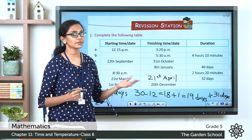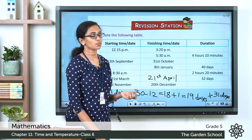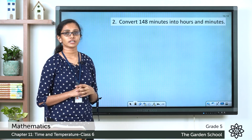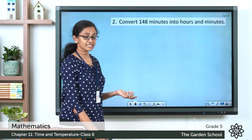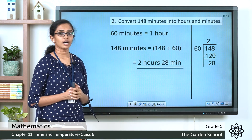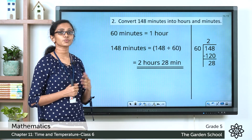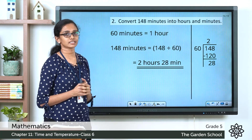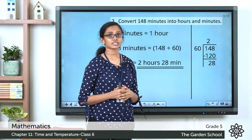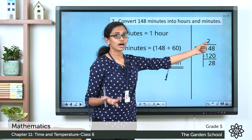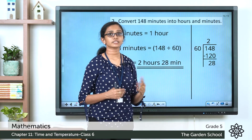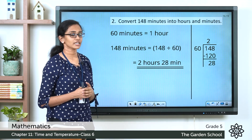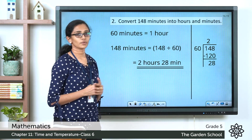I hope you are clear with these questions. The next one: convert 148 minutes into hours and minutes. We know 60 minutes equals 1 hour. So 148 divided by 60 gives 2 full hours with 28 minutes remaining. The equivalent is 2 hours 28 minutes.